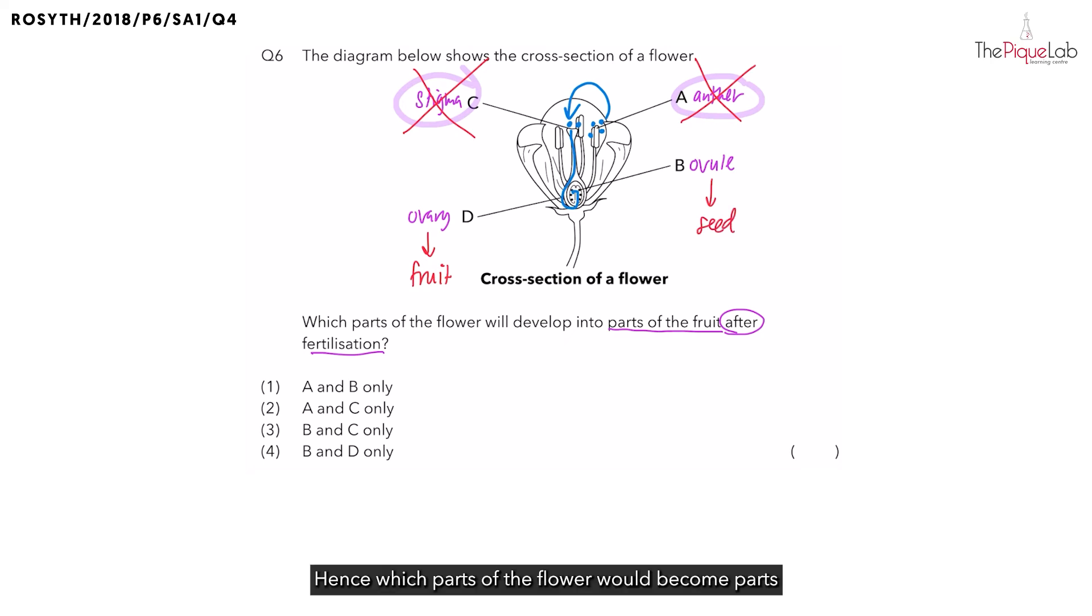Hence, which parts of the flower will become parts of the fruit after fertilization? We have the ovary becoming the fruit and the ovule becoming the seed. Giving the answer as B and D. Option number 4.